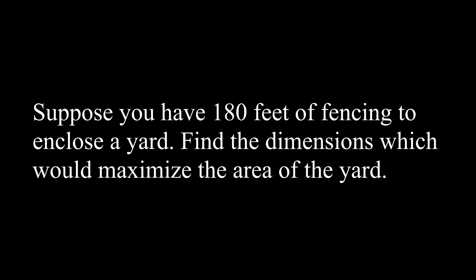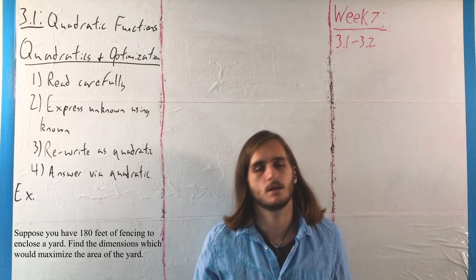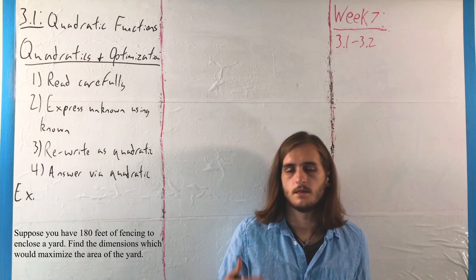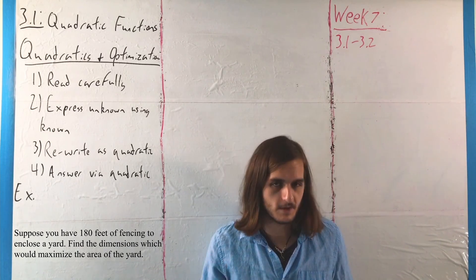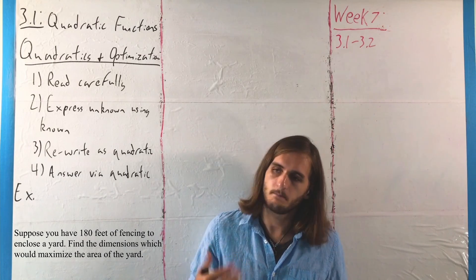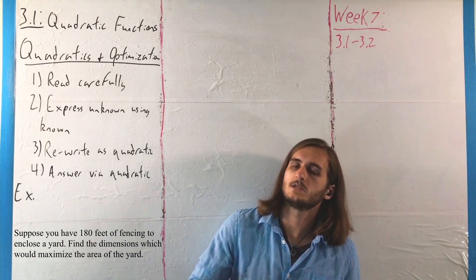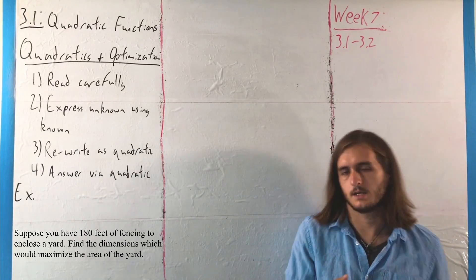So for this example, suppose you have 180 feet of fencing to enclose a yard, and we want to find the dimensions which would maximize the area of the yard. This is a classic problem in this vein, the sort of thing that you'll see here and might see in pre-calculus. You'll probably see it in calc 1 if you go on to calc 1, and you might even see it again beyond there. It comes up a lot because it's really good for building an understanding of how these types of things work.